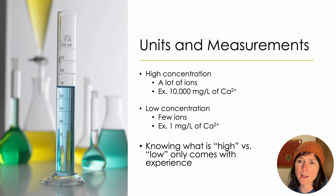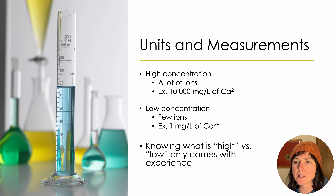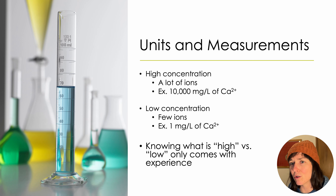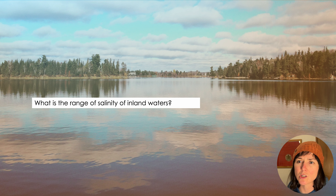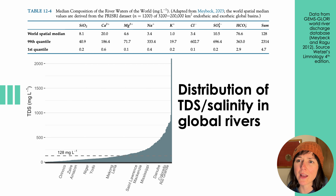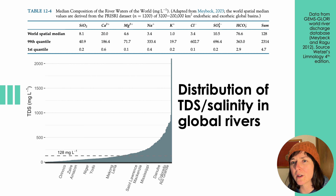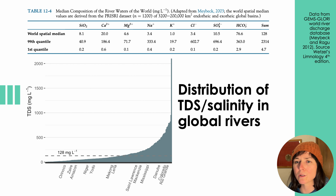The concentration of an individual ion in a lake might be referred to as high versus low. For example, a limnologist might say a particular lake has a lot of sulfate. However, knowing what is high versus low only comes with experience. Whether a lake has a lot or very few ions comes from knowing the range of salinities and ion concentrations in inland waters both globally and regionally. The most comprehensive estimate of the global mean salinity of river water is 128 milligrams per liter, based on 1,200 pristine and subpristine basins. This impressive data set, assembled by Maybeck, shows the range of salinities across the world's major river basins.